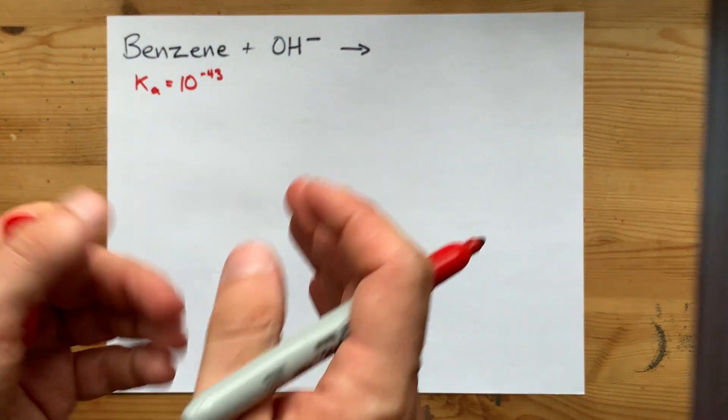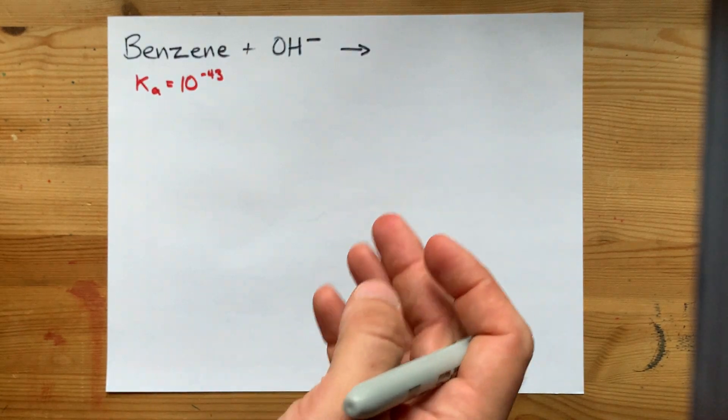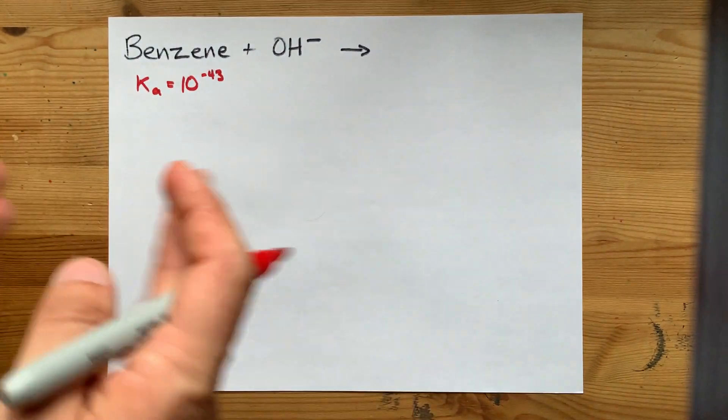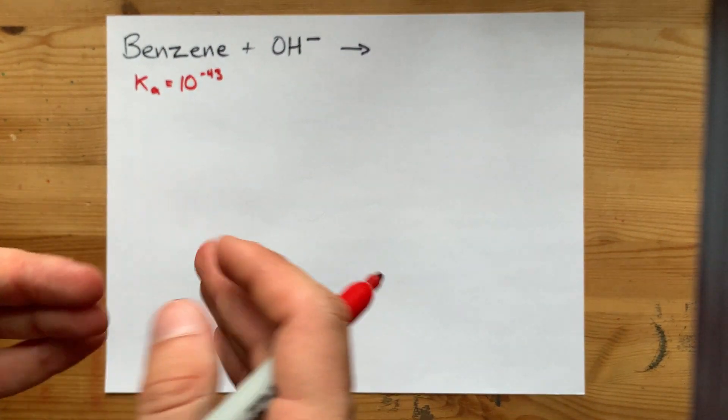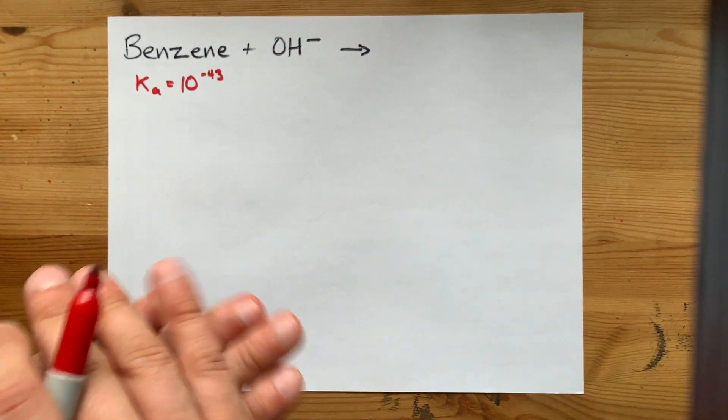The equilibrium between benzene and benzene without one of its H-plus ions favors actual whole benzene by like a factor of a trillion times a trillion times a trillion. It's insane.